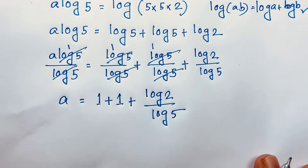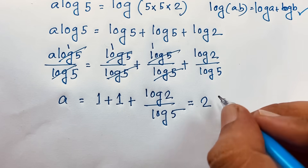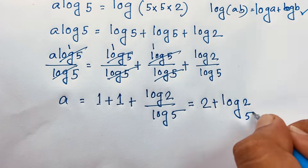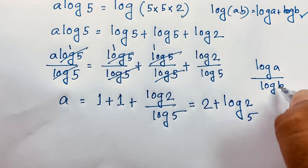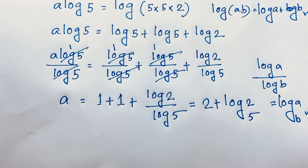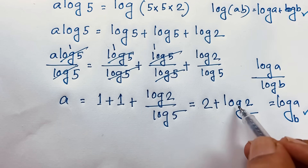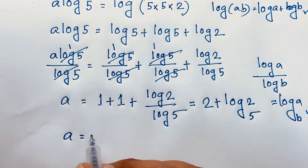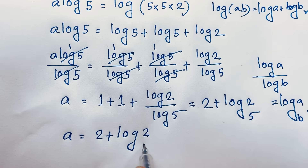Now you can see this expression here: 1 plus 1 will be 2, then plus log 2 base 5. We know that log A over log B will be log A base B. According to this formula, log 2 over log 5 will be log 2 base 5. So we will find out our final answer: A is equal to 2 plus log 2 base 5. This is the value of A in this math Olympiad question.